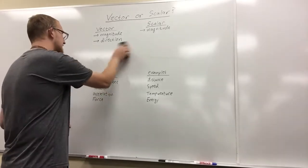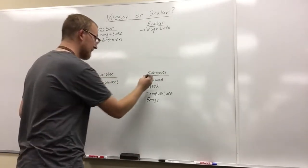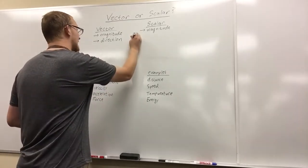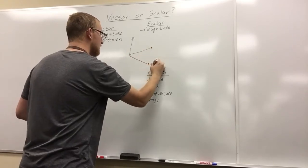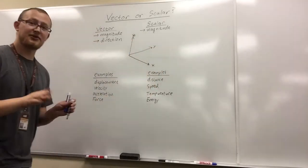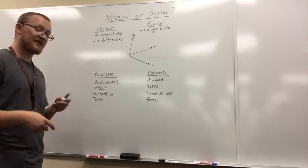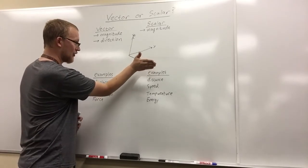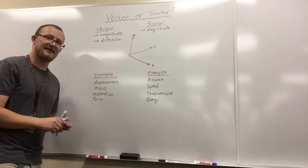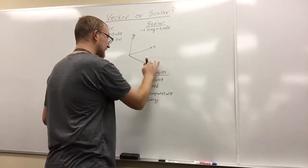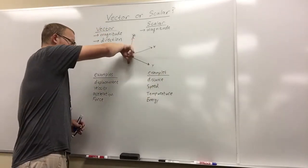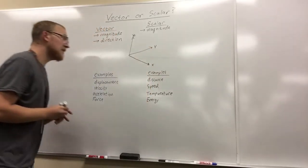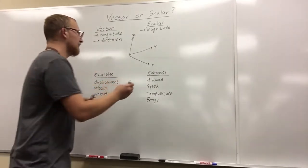Another useful thing to cover is that in our three-dimensional system, which classical mechanics is entirely based on, we have X, Y, and Z. There's a convention called the right-hand rule: point your fingers in the X direction, curl them toward Y, and your thumb points in the Z direction. We always want to follow this convention so people understand what we're doing.